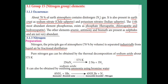We are going to see the Group 15 element, that is the nitrogen group. In the atmosphere, nitrogen occurs at 78 percent. In the earth's crust, it is in the form of sodium nitrate and potassium nitrate. The common name for sodium nitrate is Chile saltpeter, and for potassium nitrate, the common name is Indian saltpeter.